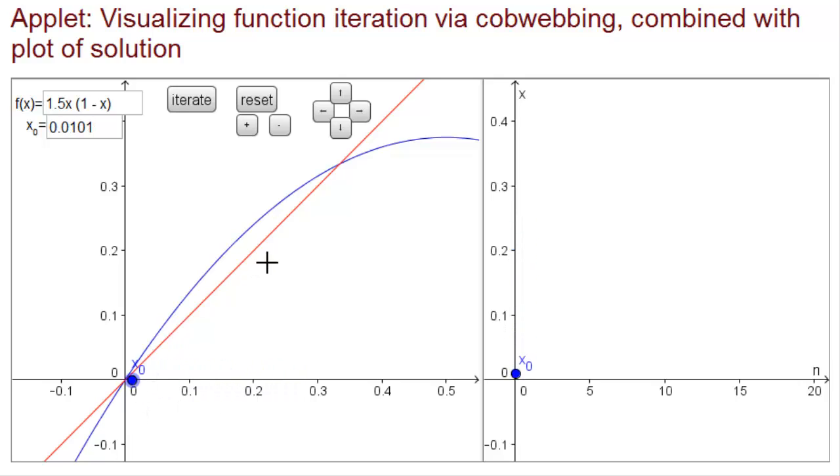Now what will happen if we start very close to the other equilibrium, zero? In this case, when we iterate the function, we see that the solution moves away from the equilibrium zero.